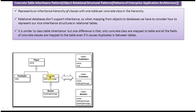Relational databases don't support inheritance. When mapping from objects to a database, we have to consider how to represent our inheritance structure in relational tables. Using the concrete table inheritance pattern, we define one table per concrete class.